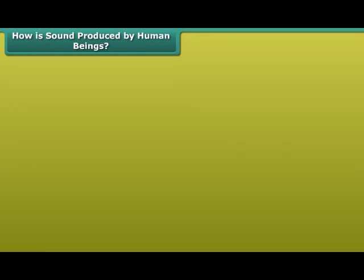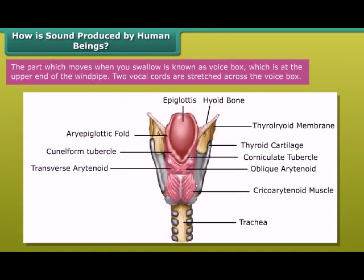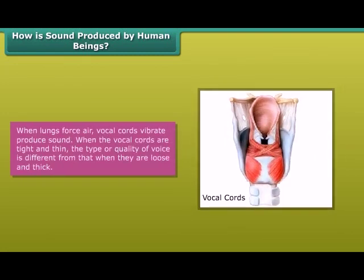How is sound produced by human beings? Sound is produced by the voice box, or the larynx, in humans. The part which moves when you swallow is known as the voice box, which is at the upper end of the windpipe. Two vocal cords are stretched across the voice box. When the lungs force air, the vocal cords vibrate, producing sound. When the vocal cords are tight and thin, the type or quality of voice is different from when they are loose and thick.